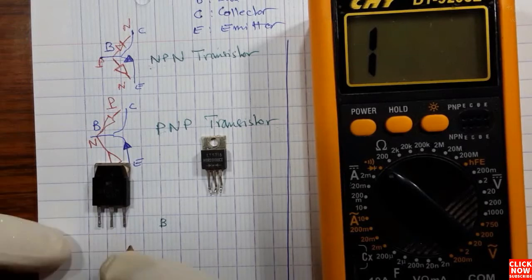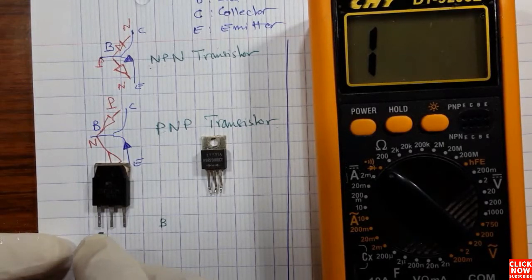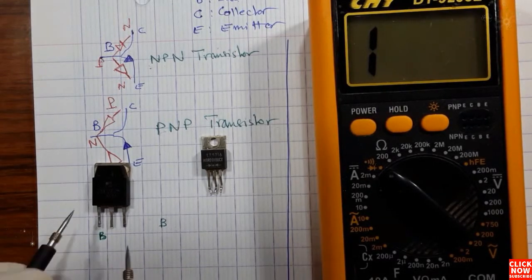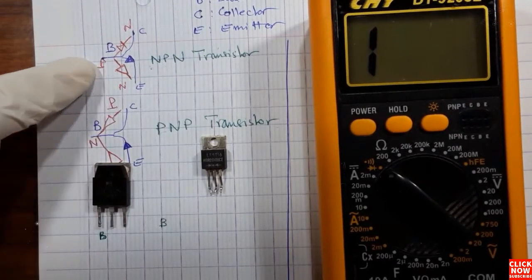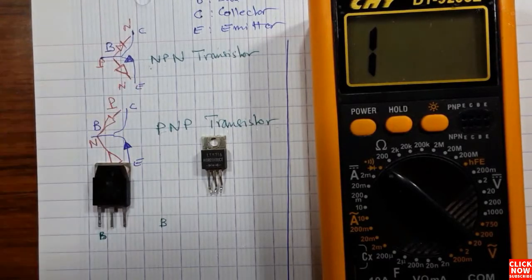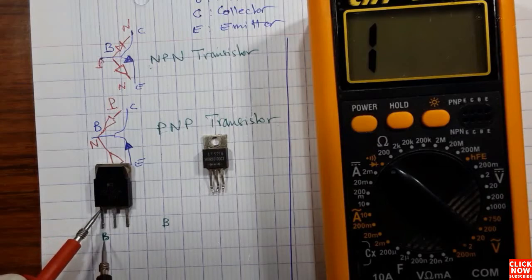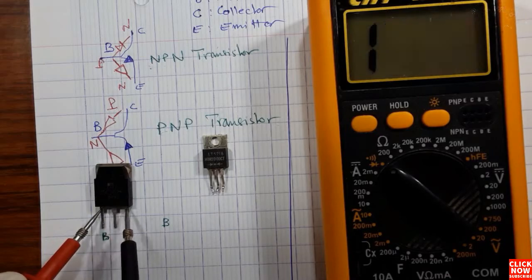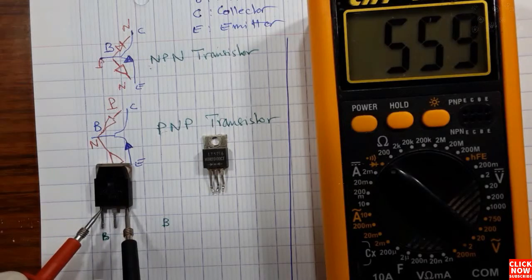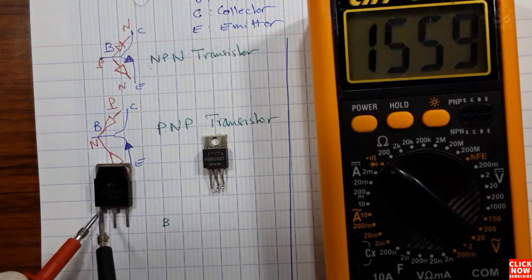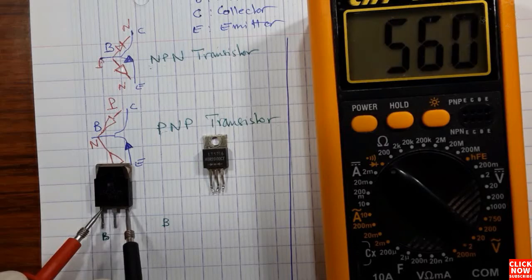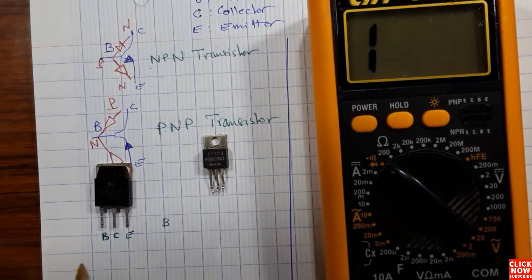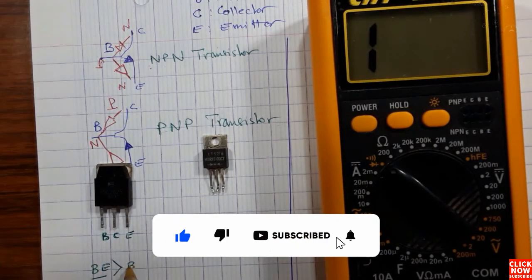Now I'm going to show you how to identify the collector and the emitter. The value between base and emitter is always greater than base and collector. Let's check the NPN transistor. We put the red probe on the base and the black probe on the second terminal — we have 458 on the multimeter. Now the third terminal gives us 559. So the third terminal is the emitter and the middle one is the collector, because base-emitter is always greater than base-collector.